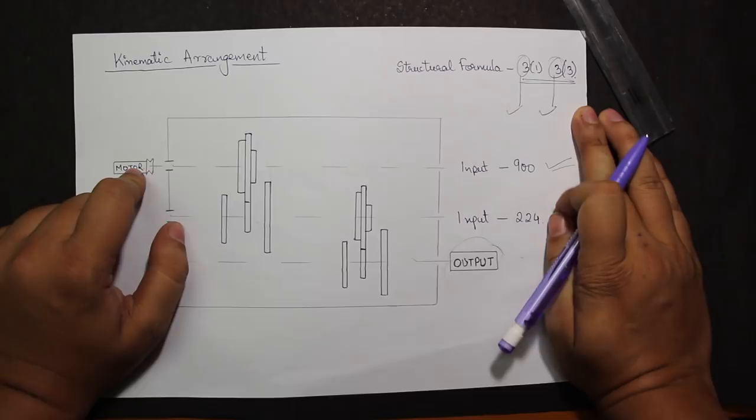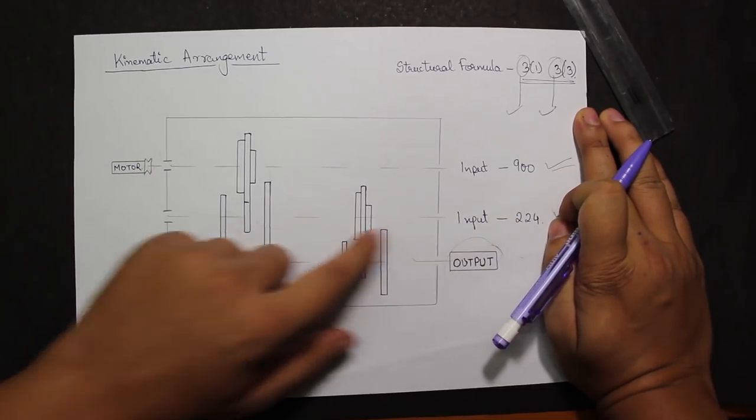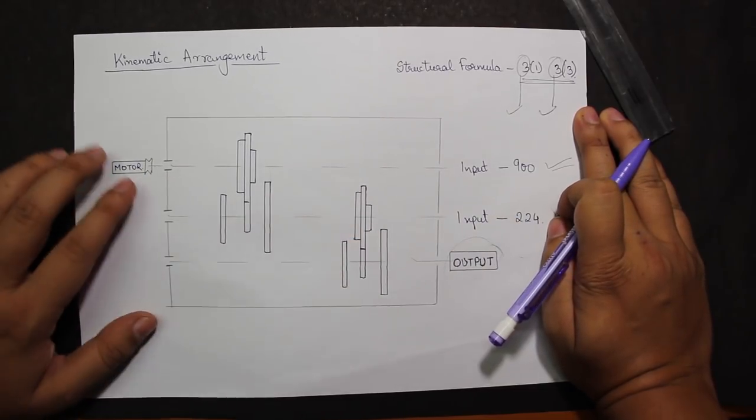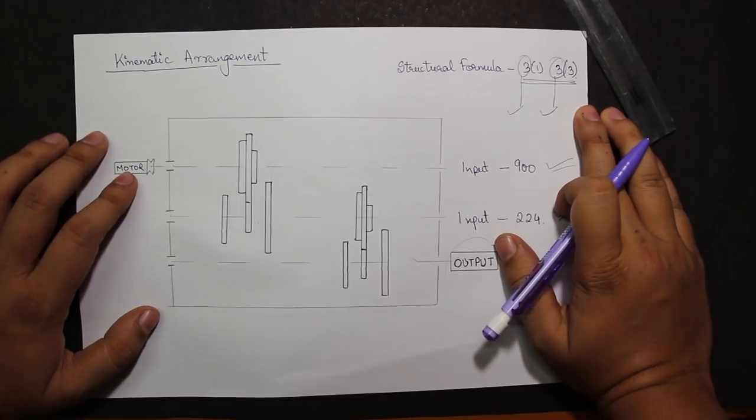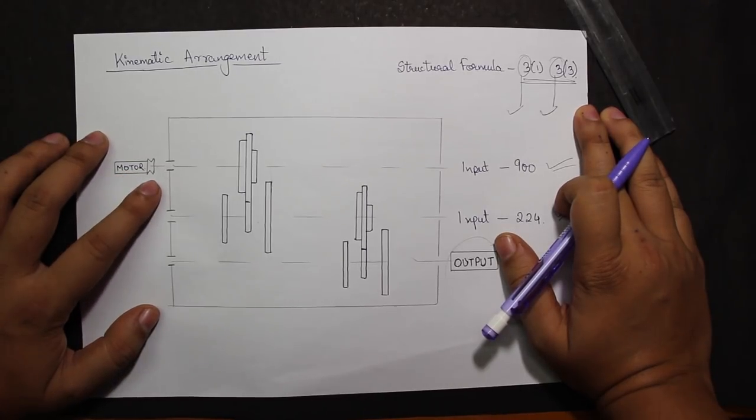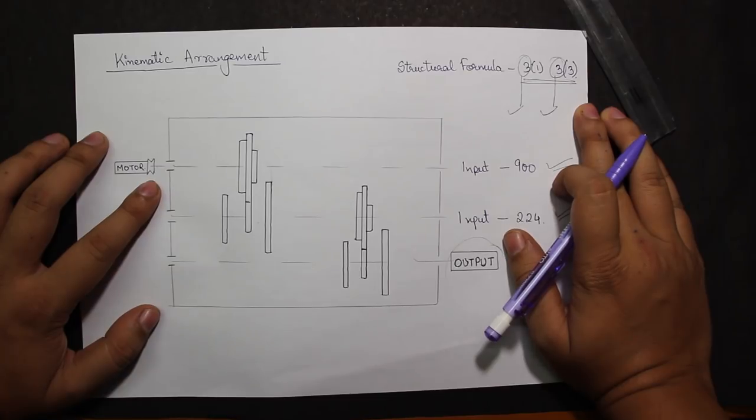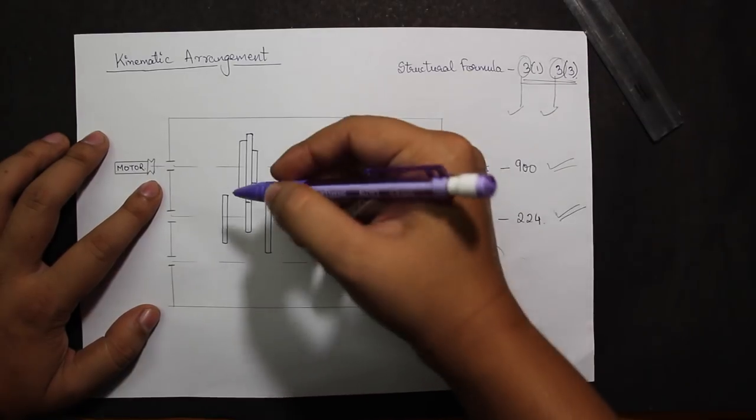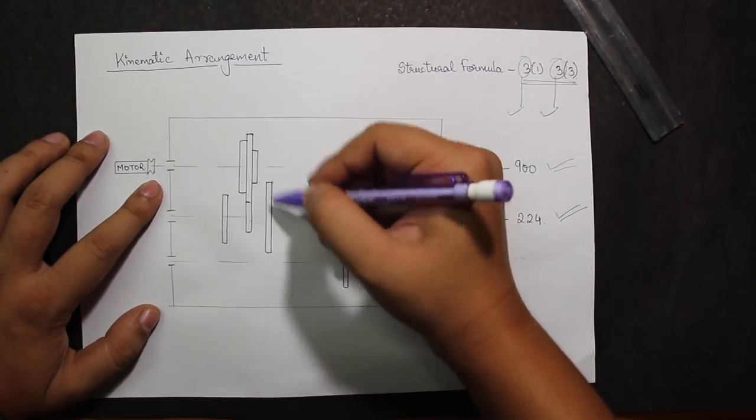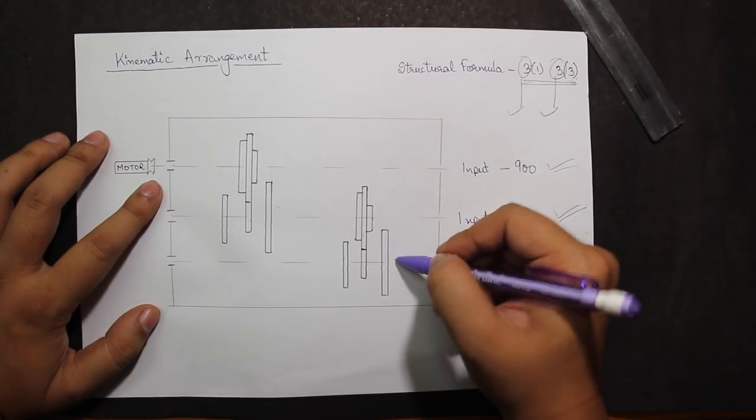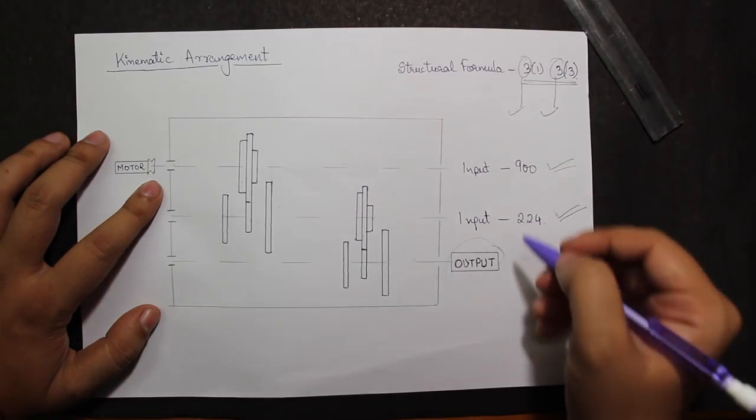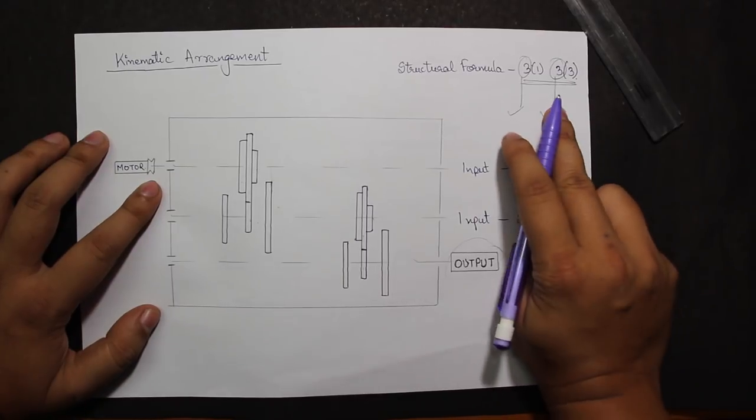And the second pair for input shaft 224 would be drawn like this. This will finally result in the output of the gearbox. As I see here, if I make the numbering of each of these gears, I'll be getting 12 different gears, but as a result I'll be getting only 9 speeds ranging from 56 to 900, as shown in the ray diagram.